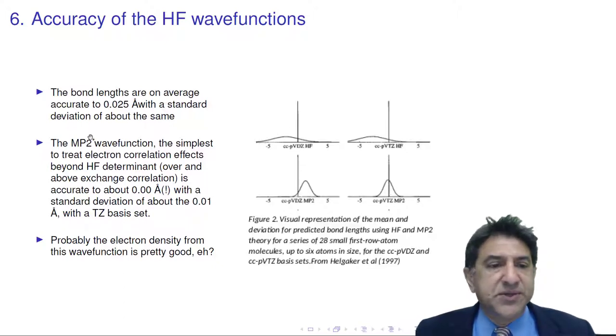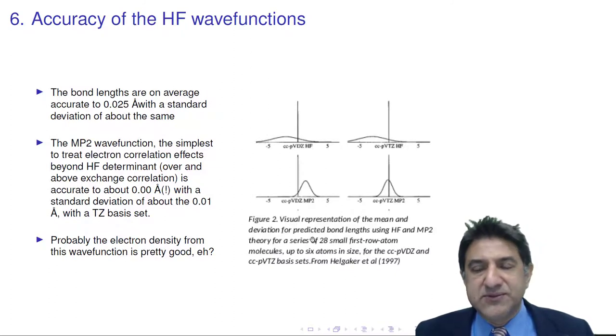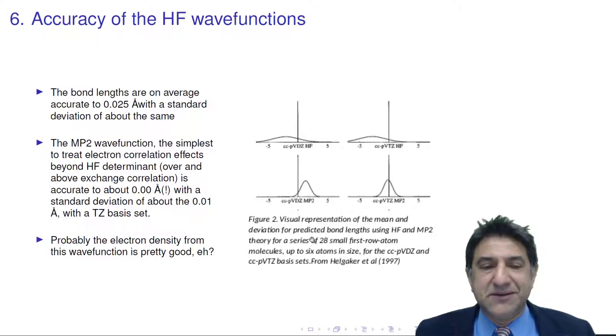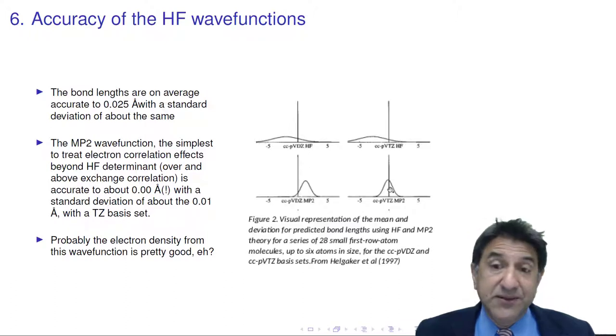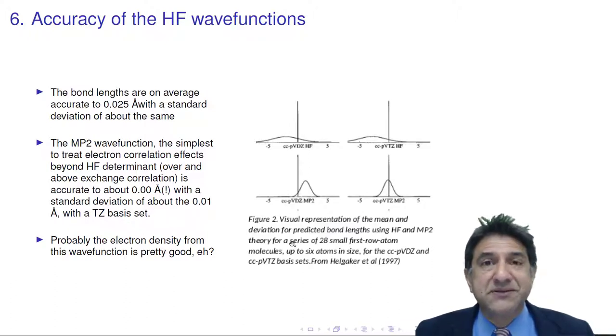But here comes the numbers from a slightly better basis set, and the numbers are spot on. Of course, there's a variation around here. But the MP2 wave function has, for a series of small molecules, an accuracy of 0.00 angstroms, plus or minus, we can say, maybe 0.01 angstroms. Wow! That's really accurate. And precise, too. Accuracy means the mean is close to here. Precision means the deviation of the predictions are very close. So apparently we don't have to go very much beyond Hartree-Fock to get excellent results. We'll explain what this MP2 wave function is later.